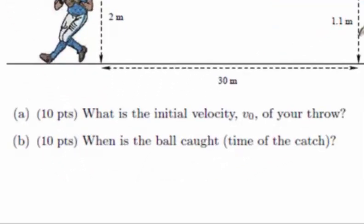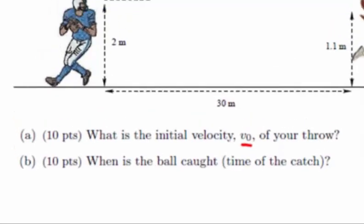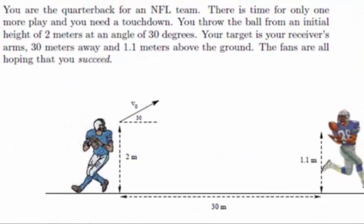The fans are all hoping you succeed. Now in this problem, what we are asked to find are the initial velocity and when the ball is caught. This problem itself does not give us all of the values. At the beginning of the throw, we know the height at which it's thrown, two meters, we know the angle at which it is thrown, 30 degrees above the horizontal. However, we don't know the initial velocity.